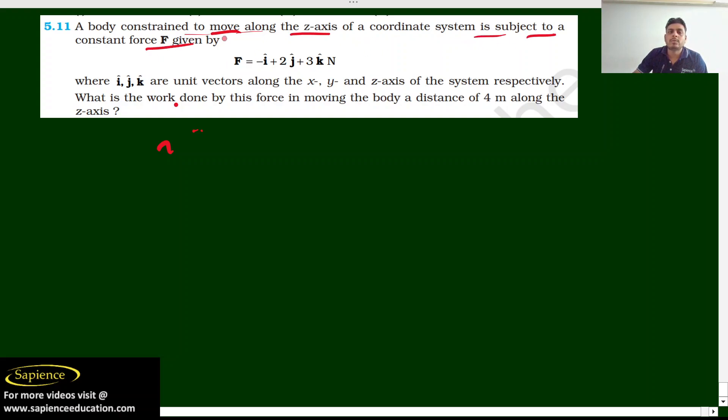is subjected to a force of minus i plus 2j plus 3k newton, where ijk are the unit vectors along the x, y, and z axis of the system respectively. What is the work done by the force in moving a body